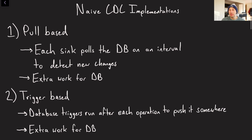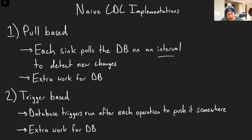What would be a really bad way of doing CDC architecturally? Number one is you could just poll the database every once in a while on an interval, detect new changes — but that's going to be a bunch of extra work for the database, handling a lot of read queries when you don't necessarily need to. Number two is database triggers — random pieces of code that fire on certain writes. That's also a lot of extra work for the database, with potential consistency issues depending on how you make your triggers. Neither of these are the ideal solution.